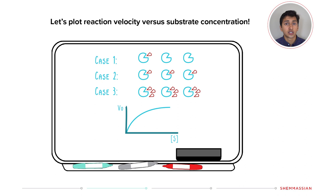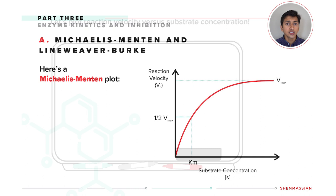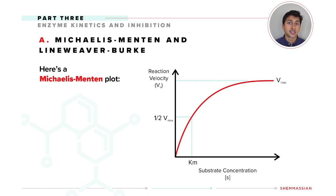Just as we described, at a low substrate concentration, we'll see that the enzymes are able to produce lots of product. However, as we increase the substrate concentration, we eventually level out. Here's the same graph that we just produced with two very important points labeled, which are the Vmax and Km.